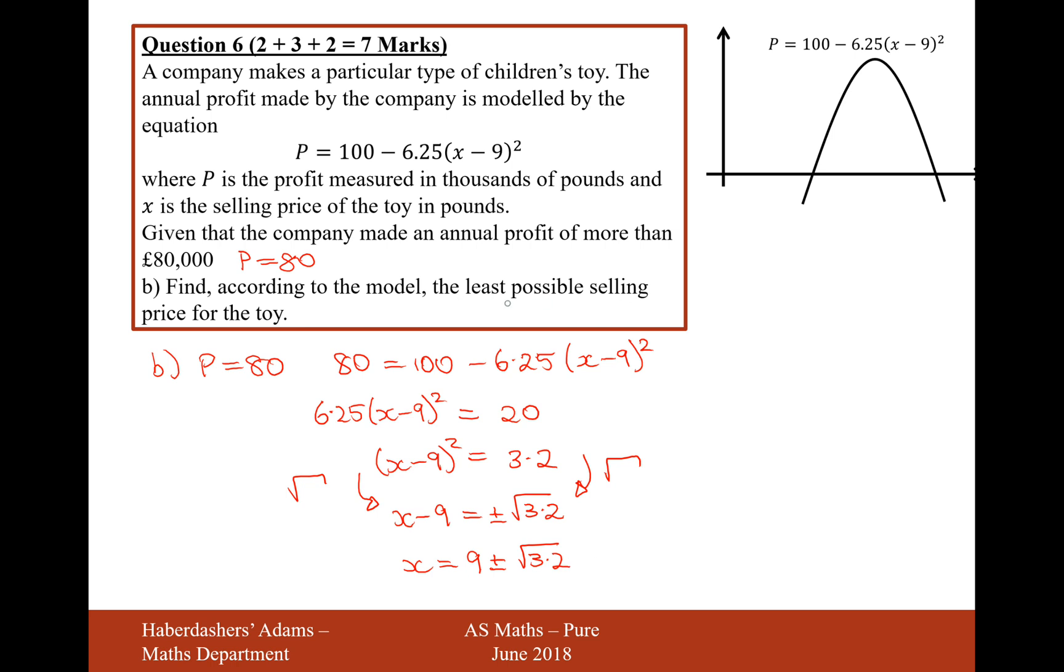So therefore, if we want the least possible value of the toy, then we're going to pick x equals 9 minus root 3.2. Let's do that on the calculator, 9 minus root 3.2, and that will give us 7.21. So 7.21, so therefore it's going to be £7.21. That'll be the least price where the company makes £80,000 profit.